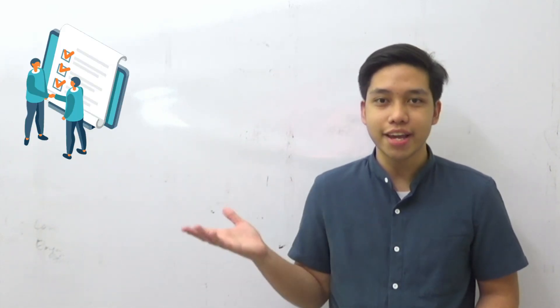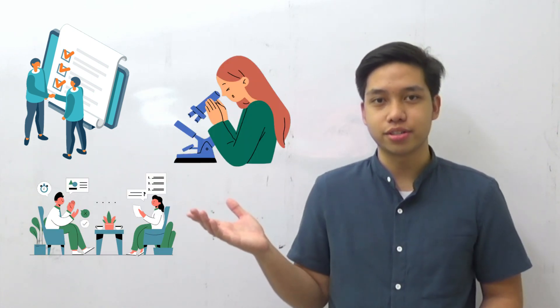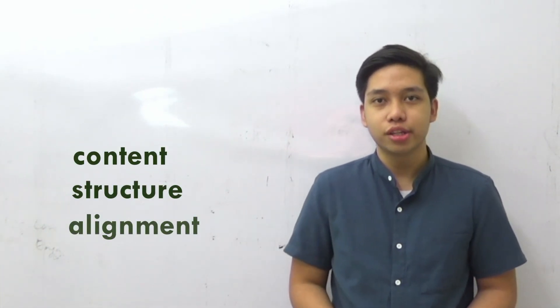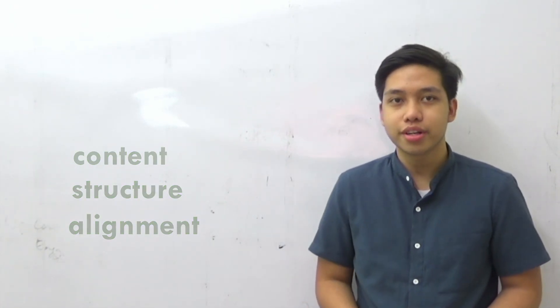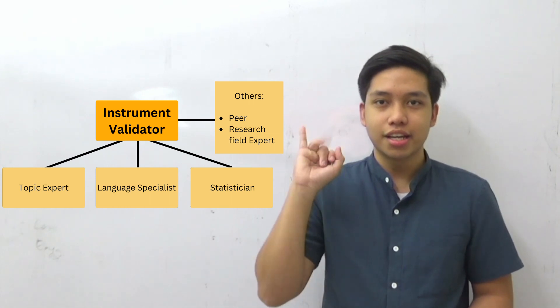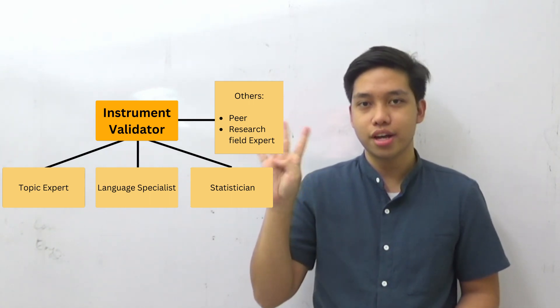To start, let me share how validators can help you with the finalization of your research instrument, whether it may be a survey, interview, or observation tools. Usually there are three required validators to check the content, structure, and the alignment of your research instrument to the title and the statement of the problem, so it will gather the required data. Your research team will be needing a validator before you can proceed with the pilot testing. The three validators may consist of a language specialist, statistician, research field expert, or a topic expert.